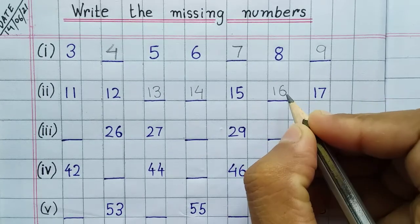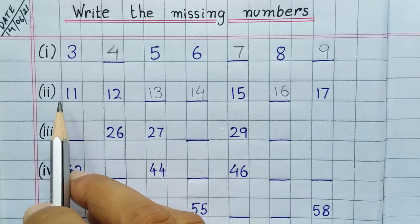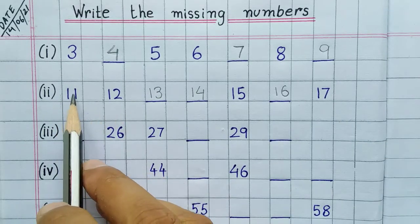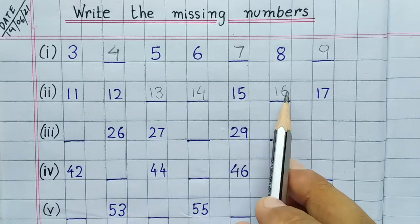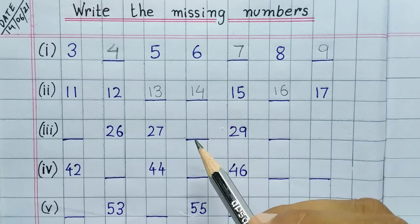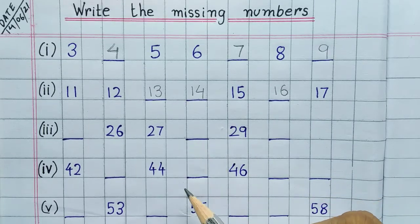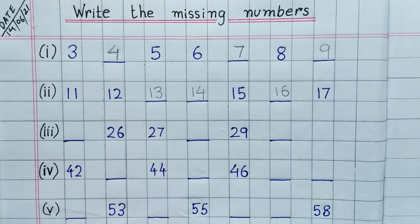And in last it is seventeen. Now you just read the question number two: eleven, twelve, thirteen, fourteen, fifteen, sixteen, seventeen. So this way you have to solve the other three questions, question number three, four, and five. Thank you.